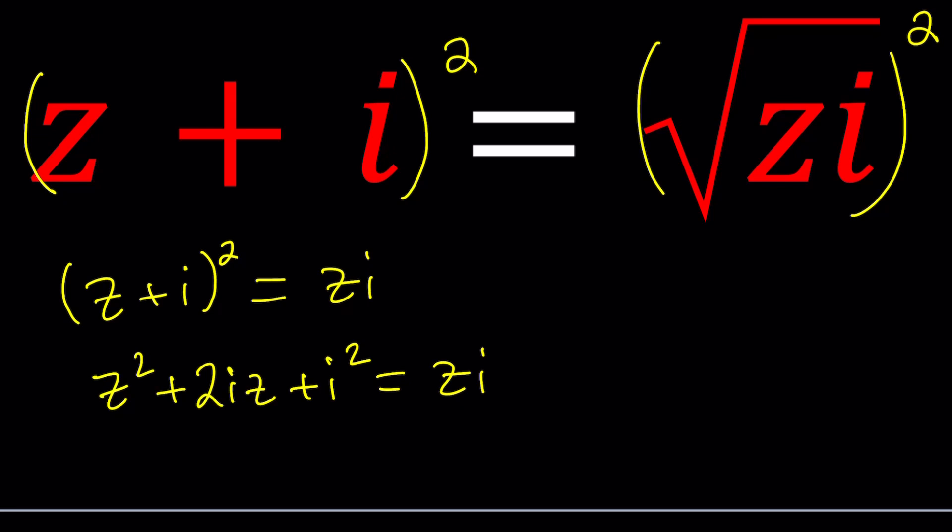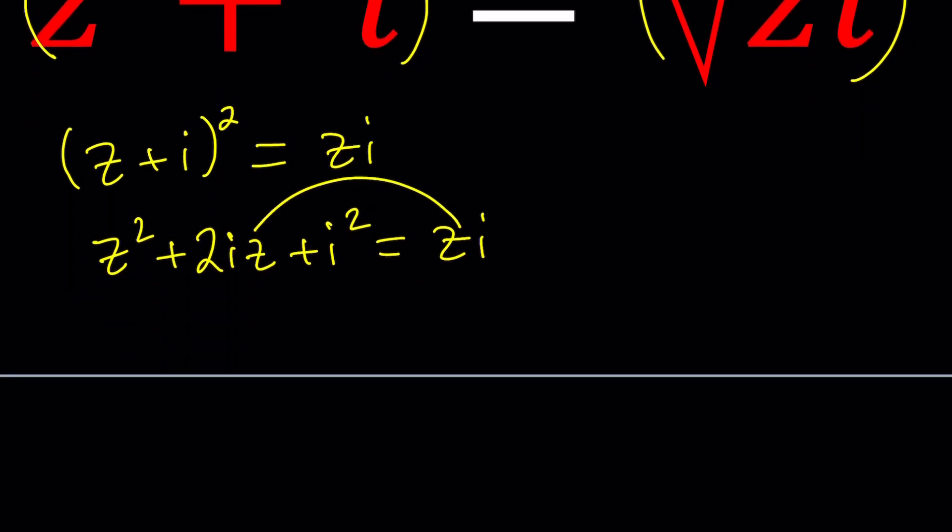Now i squared is negative 1 and if you subtract zi from both sides you get z squared plus iz minus 1 equals 0. That is a quadratic equation.